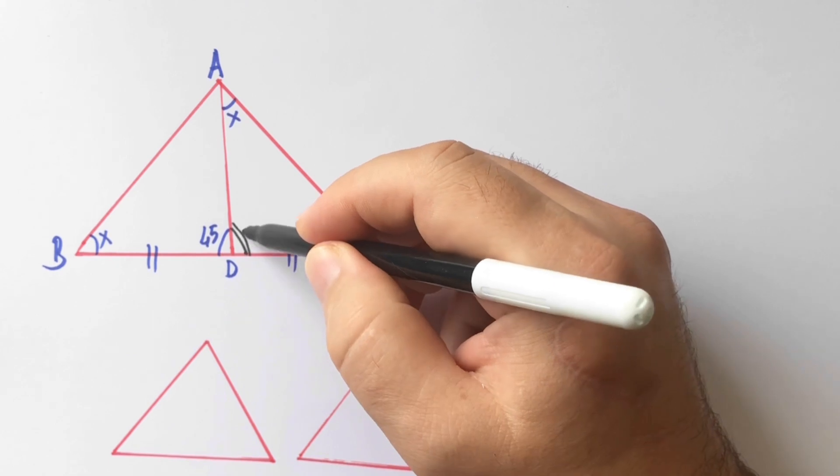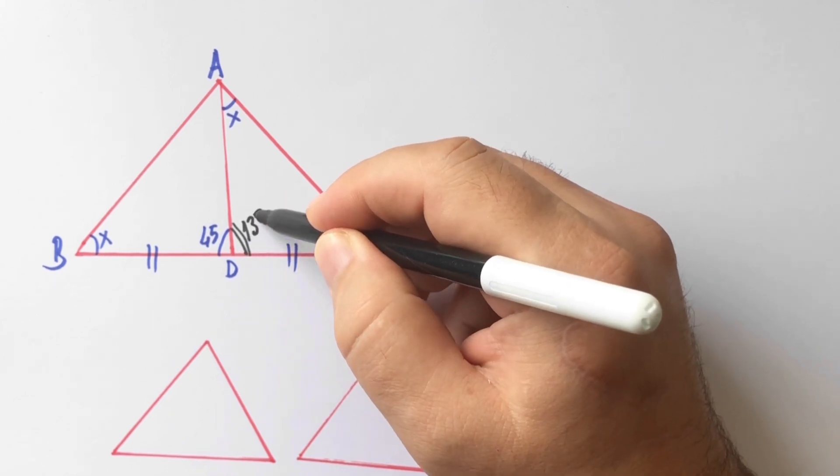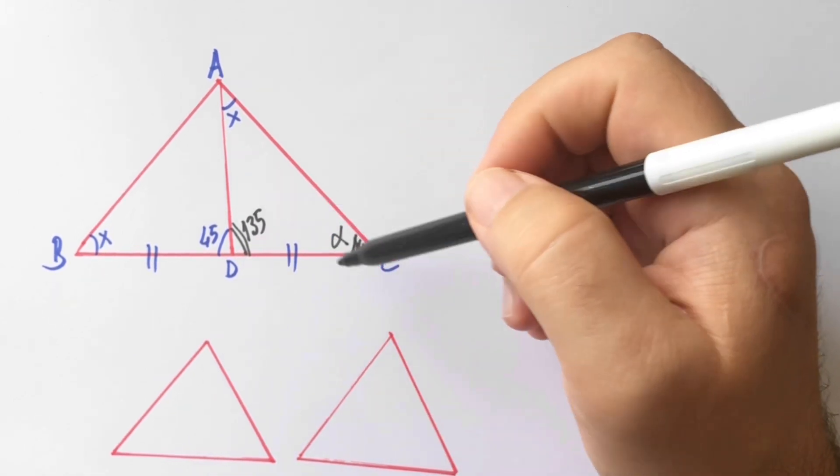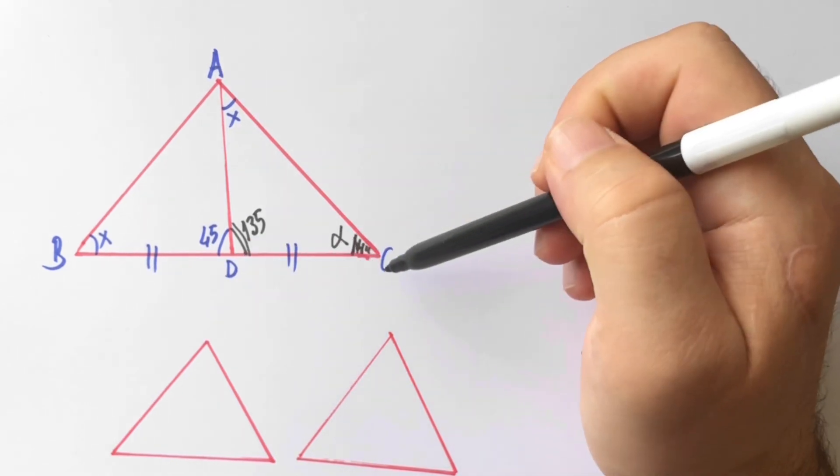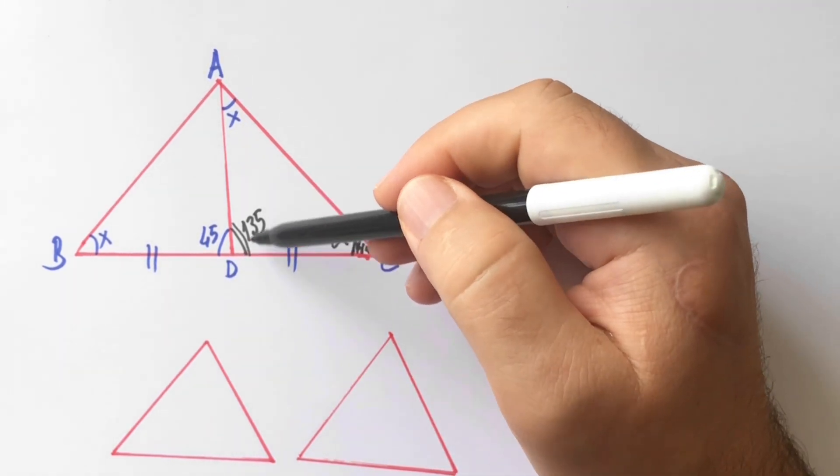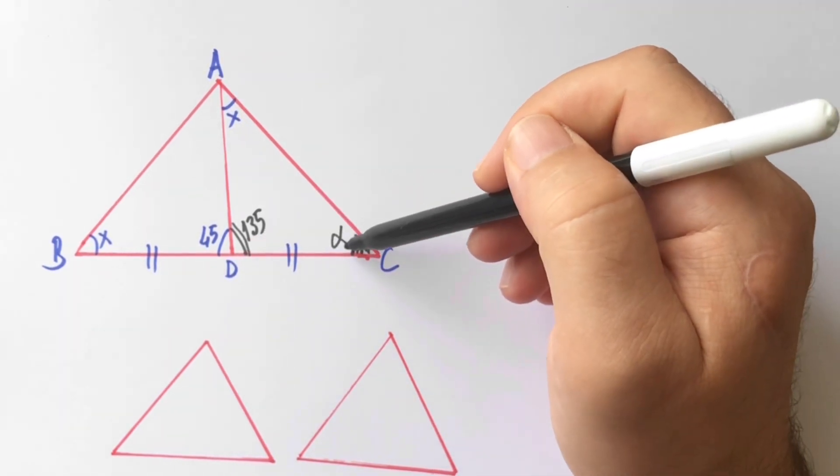So here is 135 degrees. Look at the ADC triangle: X, 135 degrees, and alpha degrees.